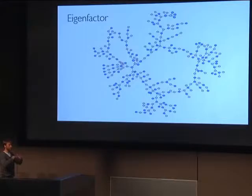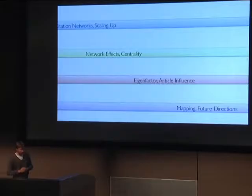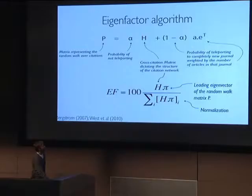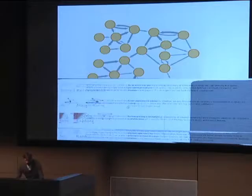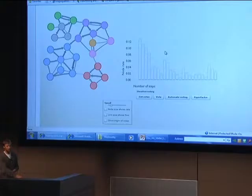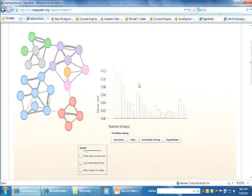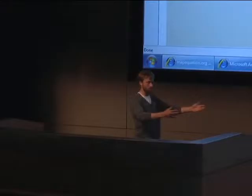The eigenfactor approach takes into account the entire network — not just for the metrics we use to evaluate journals, but also for authors, institutions, and papers. So right now I'm jumping to the algorithm. I'd rather just show you. Basically, the way the algorithm works — and I can show you how the mapping works using the mapequation.org applet. This is very similar to PageRank, with some differences.